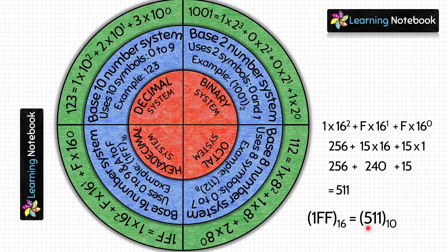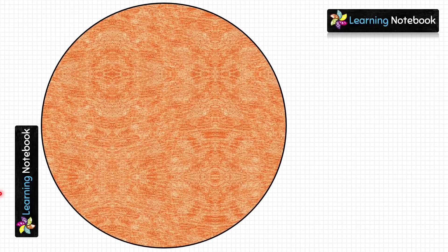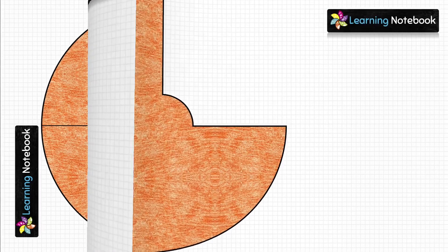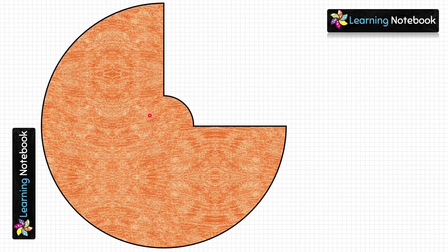So we have completed all three circles — the green, blue, and red circles. Now we will work on our last circle, which is the orange circle. Take the orange circle and fold it vertically as well as horizontally. Then using scissors, cut out one of its quadrants — just make sure you do not cut all the way to the end, as shown in the picture.